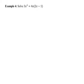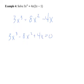Example four looks complicated — there's a little more to do. The recommendation is to distribute first, so we can then move everything to one side. Distributing, we get 3x cubed equals 8x squared minus 4x. Moving those over, we have 3x cubed minus 8x squared plus 4x equals zero.